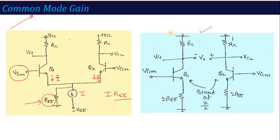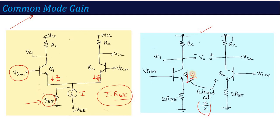Now individually, this common mode half circuit can be analyzed to calculate the output voltage. We have VCC grounded for signal analysis. VC1 is the output. This is transistor Q1 with resistance 2REE. When I/2 current flows through the half circuit, the emitter current is I/2, and this current through 2REE gives I/2 multiplied by 2REE, which equals I into REE — the same total voltage. So REE in the half circuit is written as twice of REE.